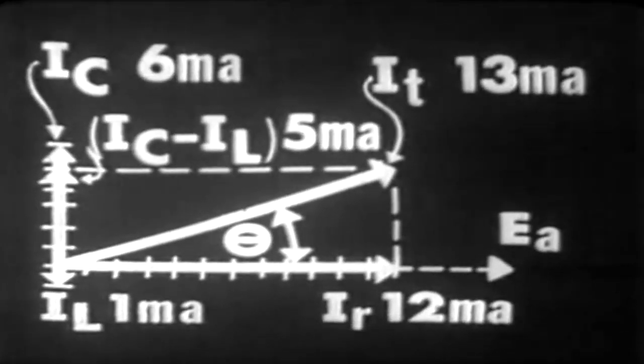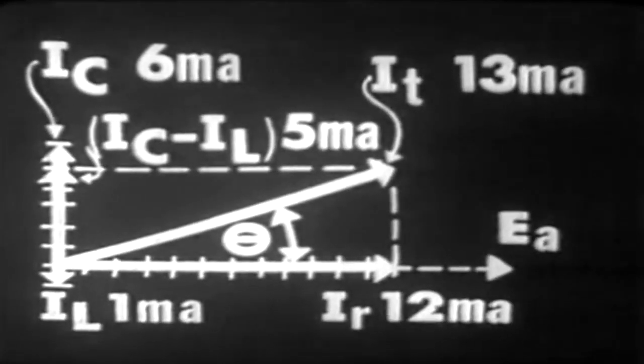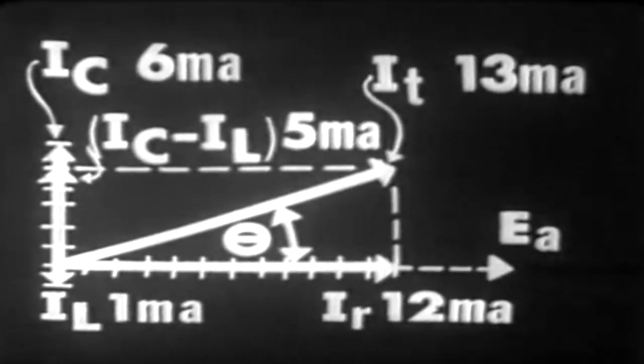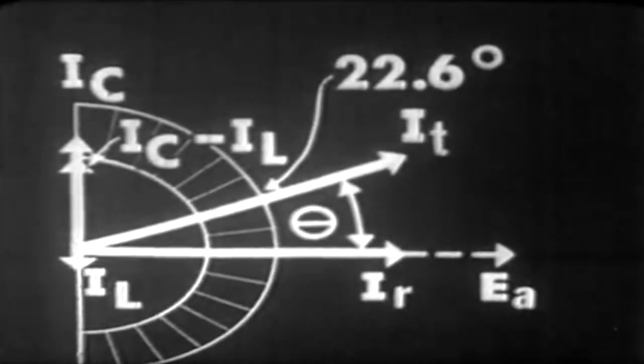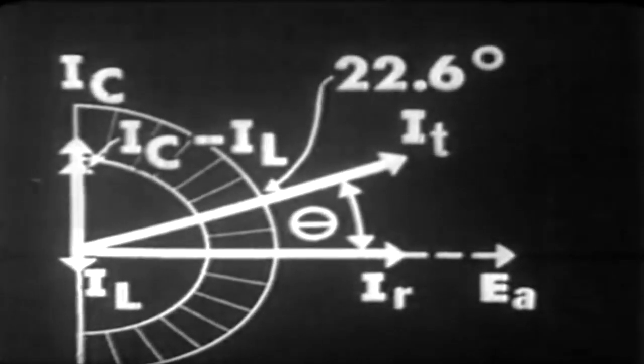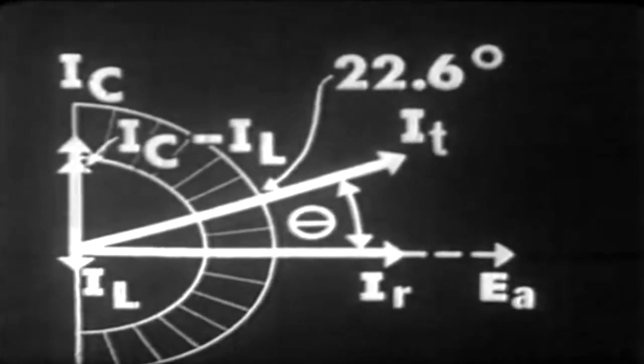Now we have our phase angle theta generated here. Remember, theta is the angle with which current leads or lags the applied voltage. Here it's leading. We could measure this phase angle with a protractor, and it would read 22.6 degrees. This would be plus 22.6 degrees, because we have a leading phase angle.